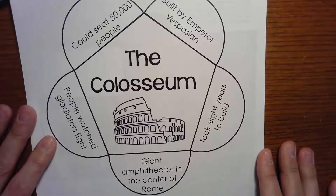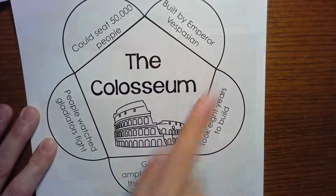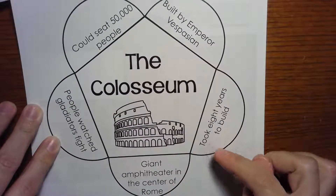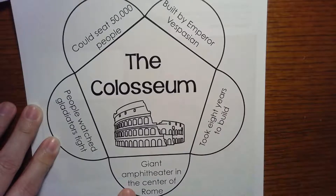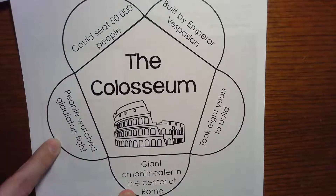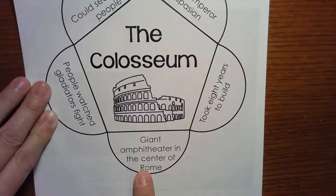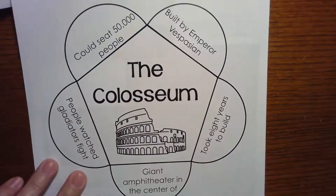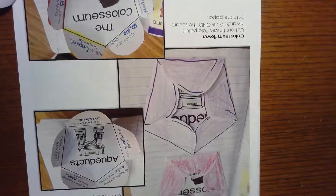The Colosseum is ancient Roman architecture that is well known. It could seat 50,000 people and it was built by Emperor Vespasian. It took eight years to build. People watched the gladiators fight there, and it is a giant amphitheater in the center of Rome. I know you saw that in the video.